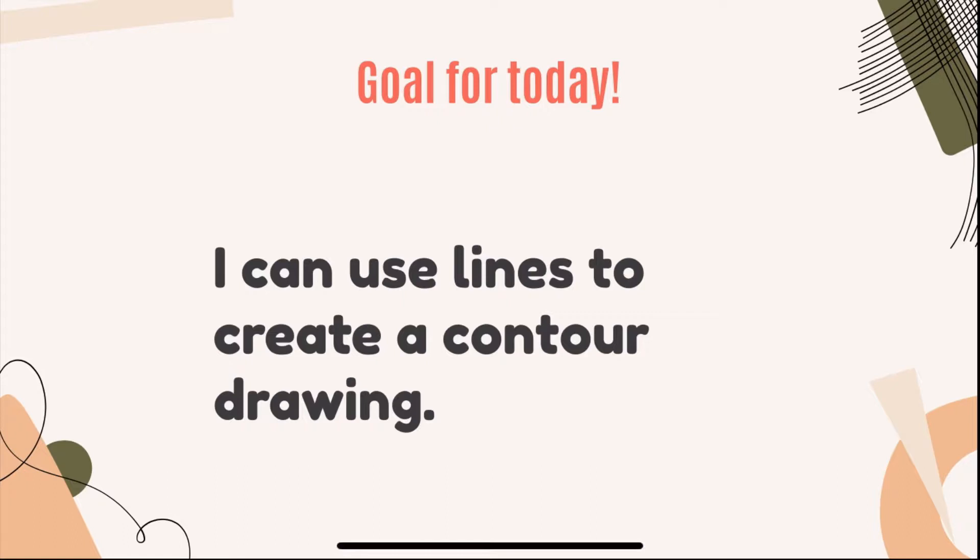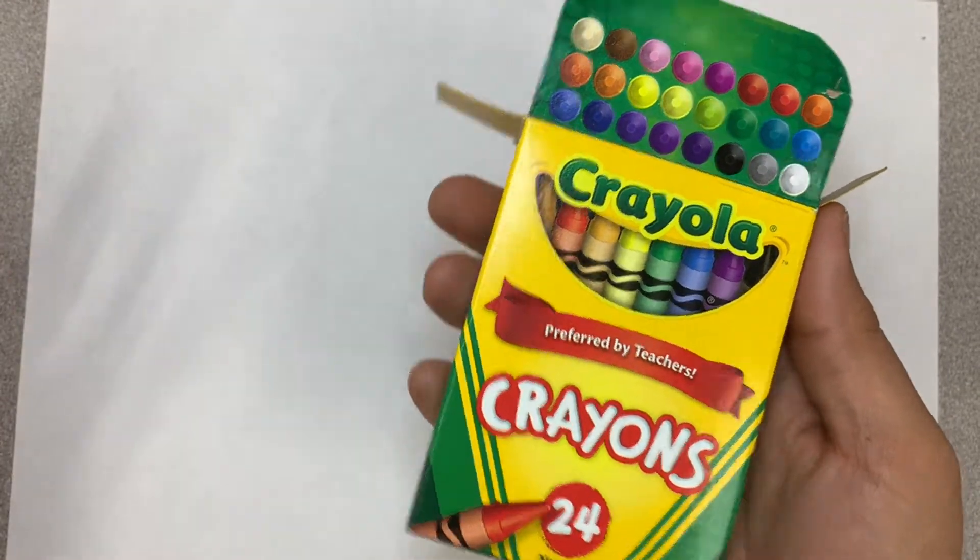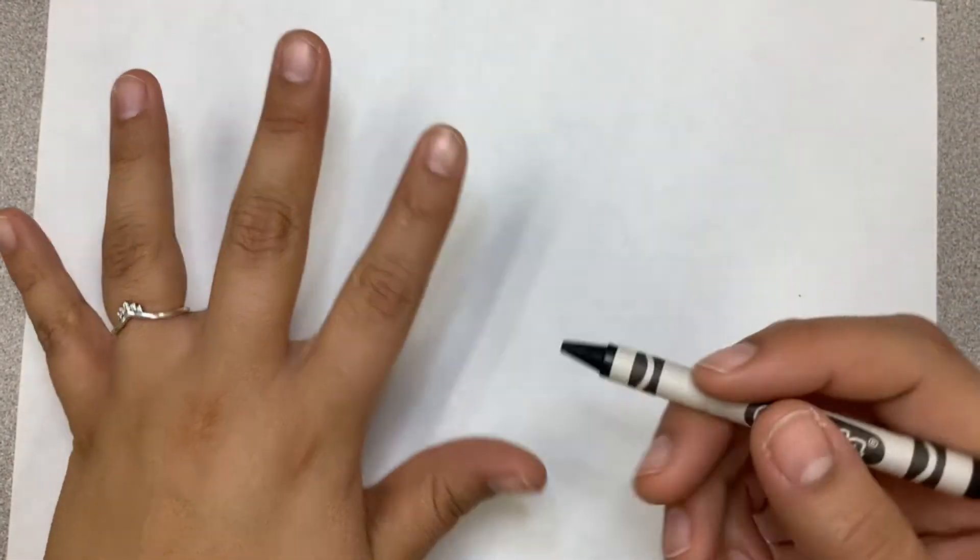And our goal for today is I can use lines to create a contour drawing. All right, I'm going to be doing two different versions. This is my first version. This is what I'm going to be doing with third grade, so if you're third grade, please watch this one. So all you need is that piece of paper, a full sheet and crayons. You can use a pencil too, but I'm going to go ahead and trace on my hands.